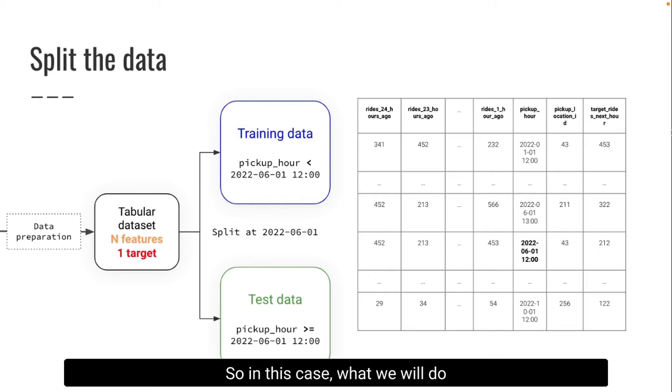So in this case, what we will do is we will take a cutoff date, for example 1st of June 2022 at 12, and we're going to say training data is everything that happened before that day, and test data is all the data that we collected after that date.